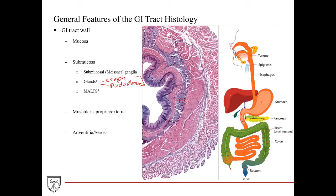Likewise, MALT can also be found in the submucosa, but only in some specialized regions. These large MALTs found in the submucosa tend to start in the lamina propria of the mucosa and then extend into the submucosa. They are typically associated with the latter parts of the GI tract, such as the ileum — the distal-most portion of the small intestine — as well as some isolated areas of the colon, but more prominently in the appendix. For most of the rest of the GI tract length, we may not see such large MALTs in the submucosa.